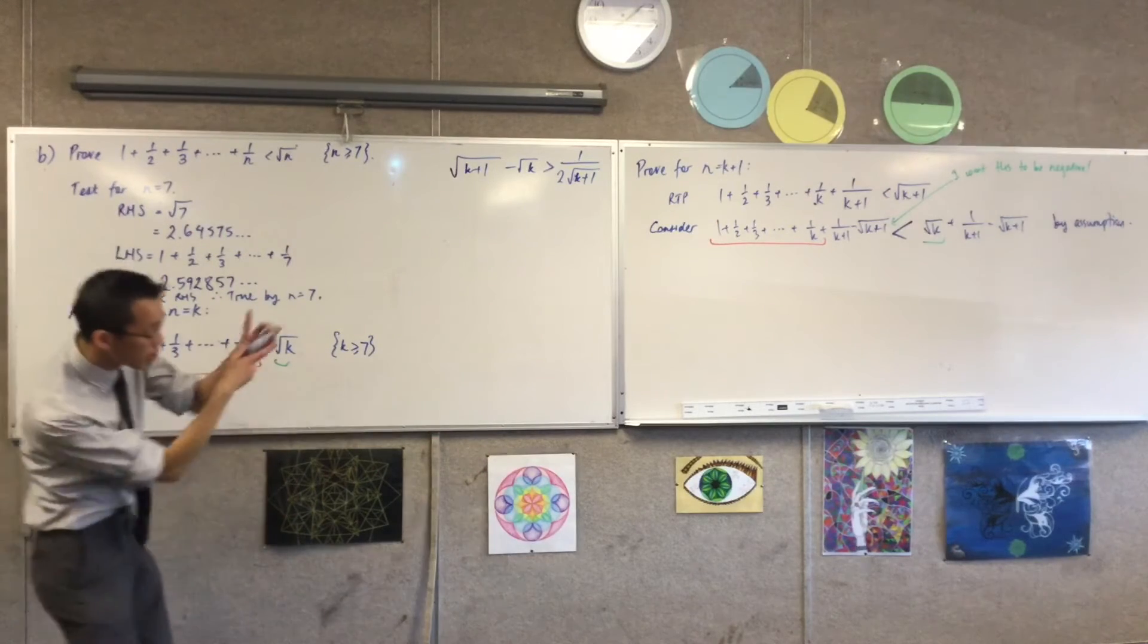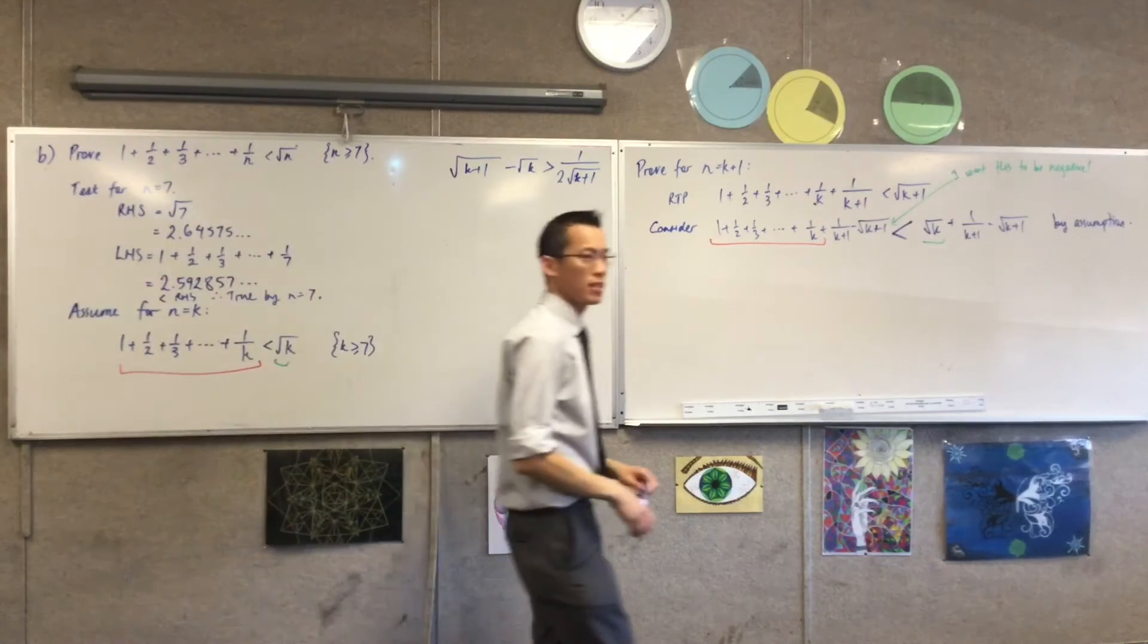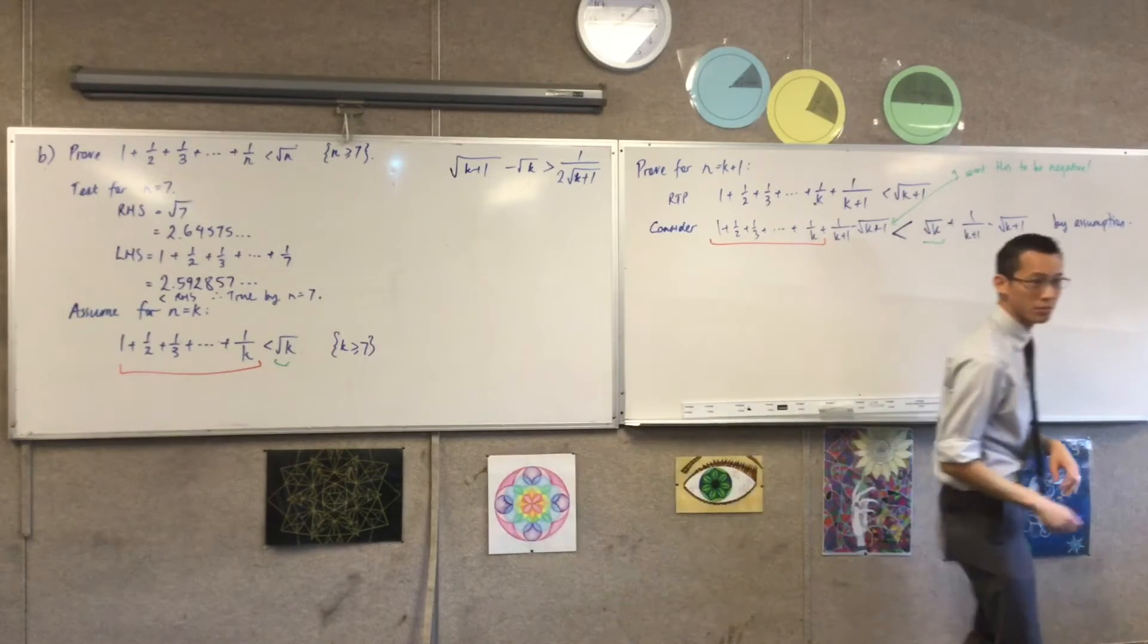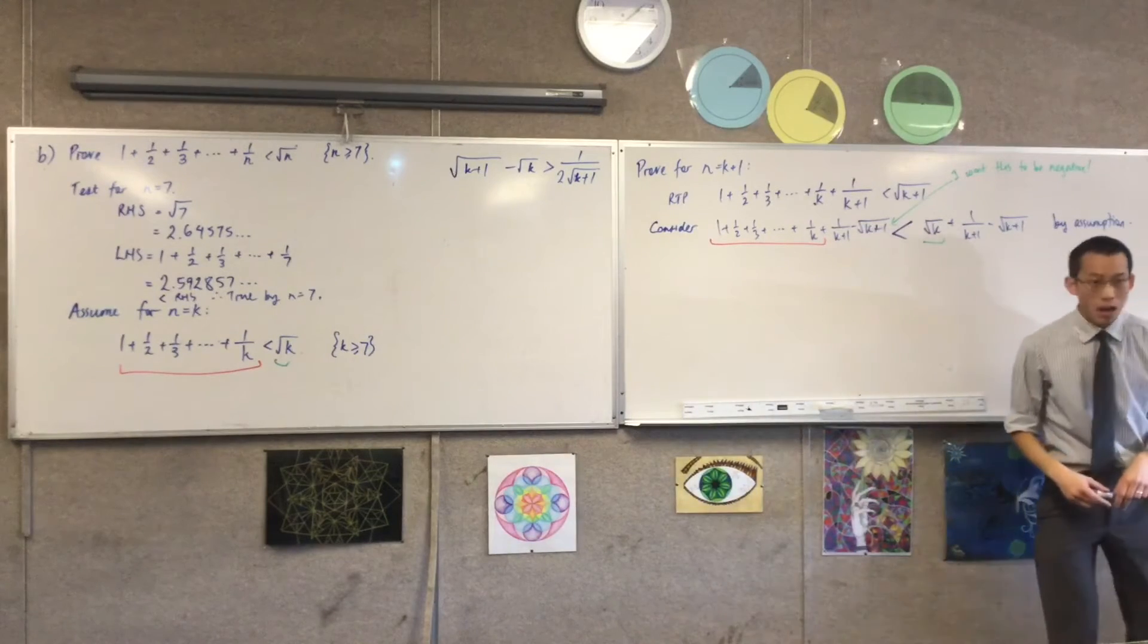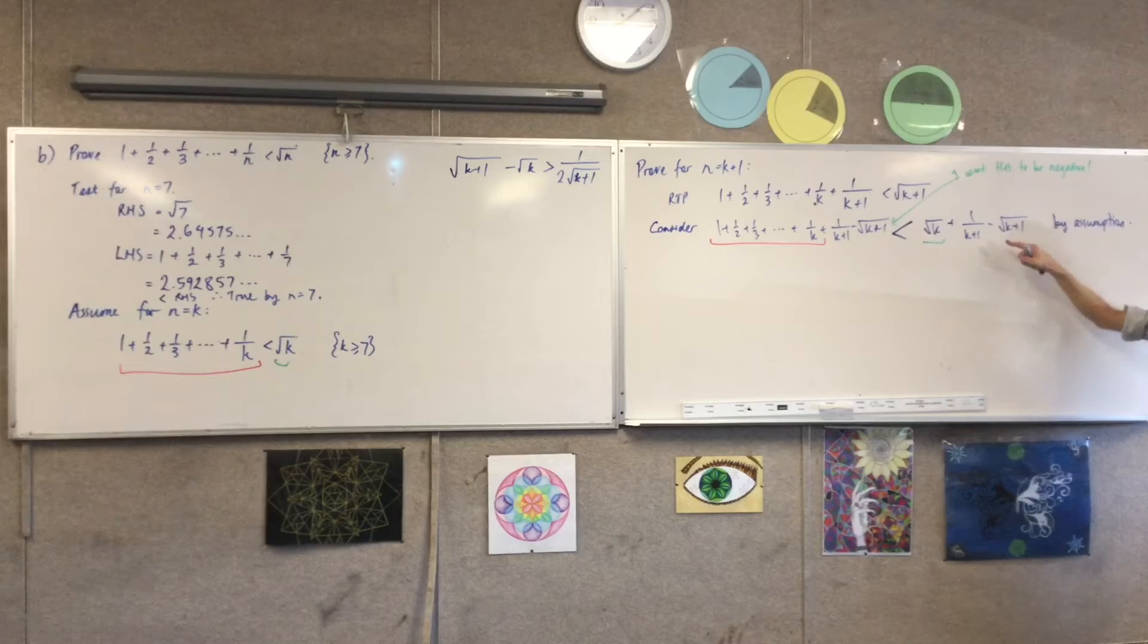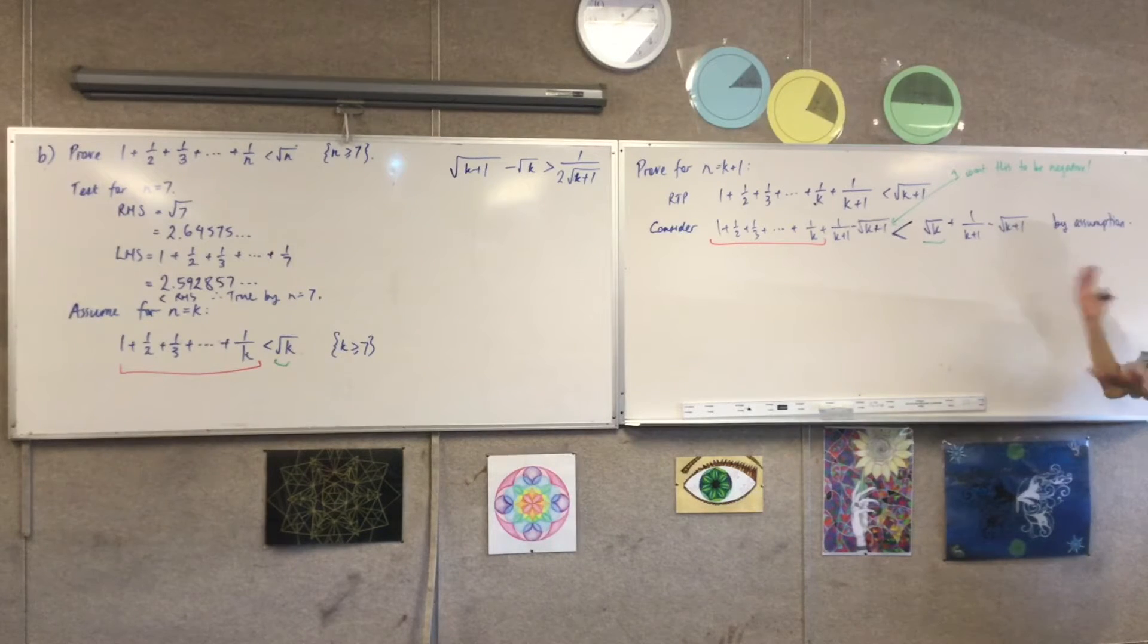Now look closely at that and look closely at what I've got over there. How is it different? Because it's not exactly what I want. Yeah, so you can see here I've got root k minus root k plus 1. I have it in the wrong order.